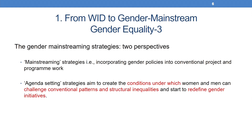There are two main perspectives on gender mainstreaming strategies. One involves incorporating gender policies into conventional project and program work — for example, providing affirmative action to bring women to the fore. The second perspective concerns agenda setting: strategies which aim to create conditions under which women and men can challenge conventional patterns and structural inequalities and start to redefine gender initiatives.